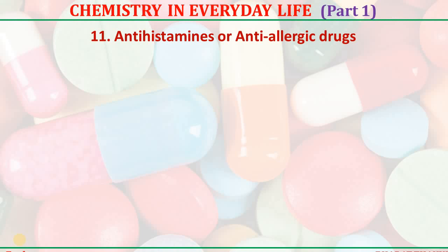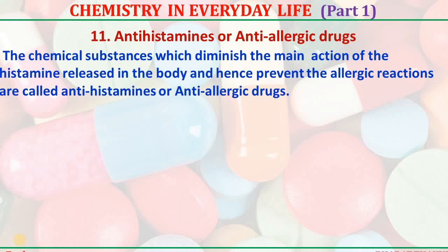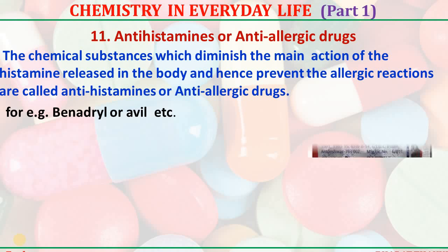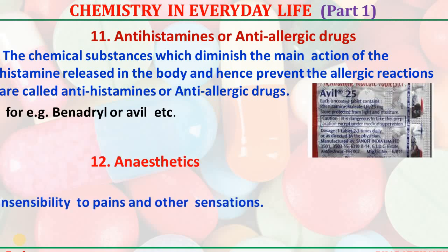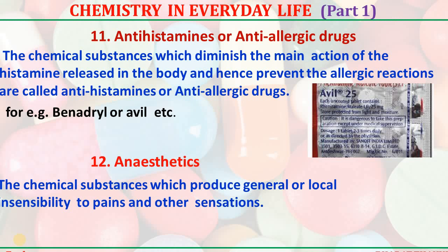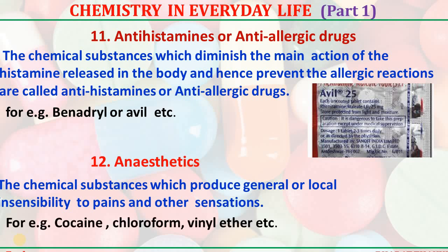Antihistamines or antiallergenic drugs — chemical substances which diminish the main action of histamines released by the body and hence prevent the allergic effects are called antihistamines or antiallergenic drugs. For example, benadryl. Anesthetics — the chemical substances which produce general or local insensibility to pain and other sensations are called anesthetics. For example, cocaine, chloroform, etc. Anesthetics are generally used during operations to produce insensibility to pain.